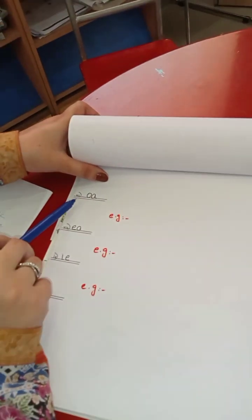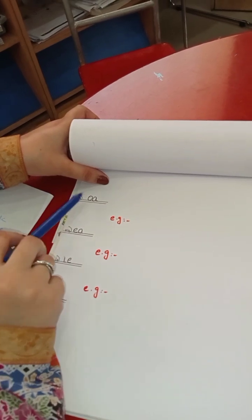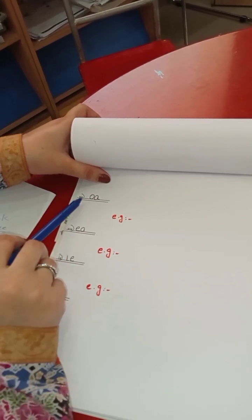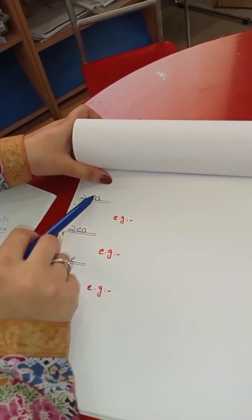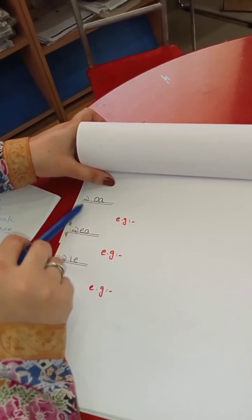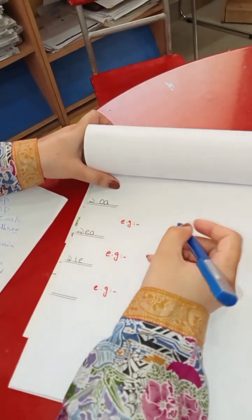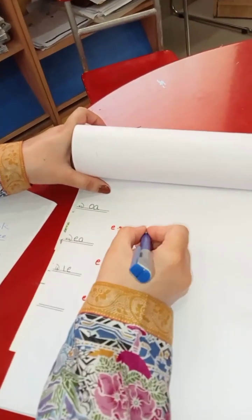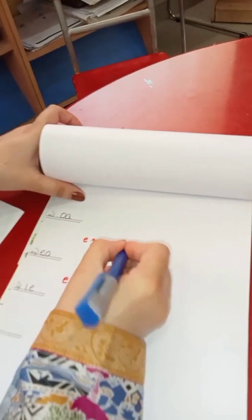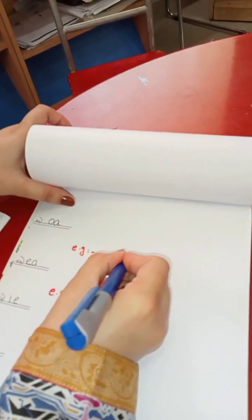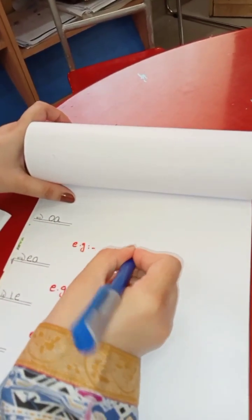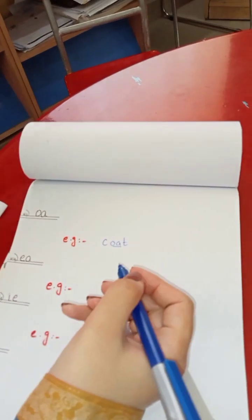The next digraph is OA. The sound of O is 'o' and A is 'a'. When they both come together, they make the sound 'o'. Like 'c-oa-t' — it becomes 'coat'.